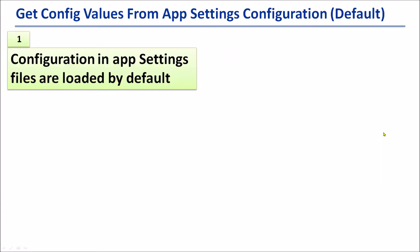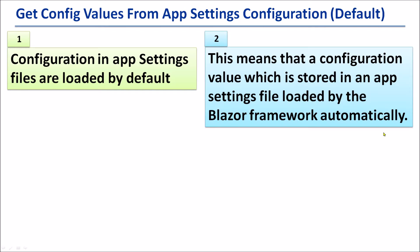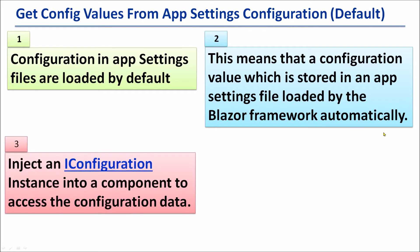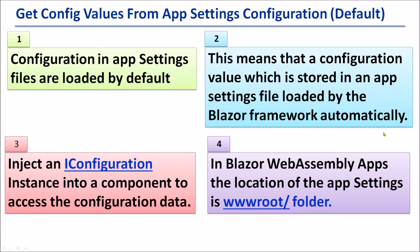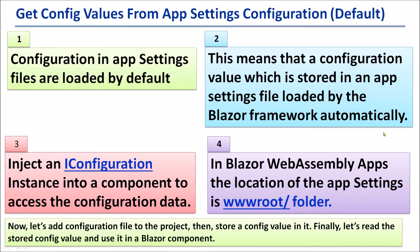Now let's see how to get config values from appsettings configuration - this is the default method. Configuration in appsettings files is loaded by default, meaning a configuration value stored in an appsettings file is loaded by the Blazer framework automatically. In order to get it, inject an IConfiguration instance into a component to access the configuration data. In Blazer WebAssembly apps, the location of the appsettings is the web root folder. Now let's add a configuration file to the project, store a config value in it, and read it in a Blazer web component.